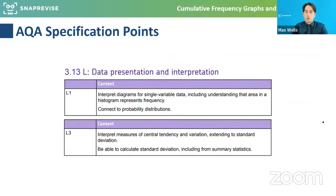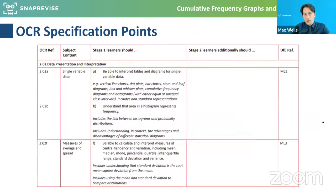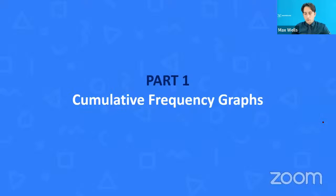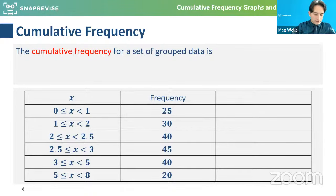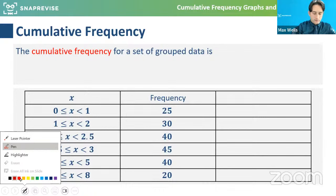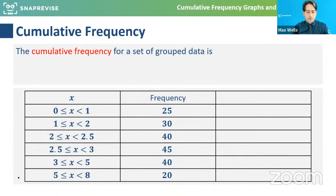This is something that's examinable on all the different exam boards, so it's very much a part of the A-level whether you're doing it with AQA, OCR, or Edexcel. This topic will appear. So to start with, we're going to look at cumulative frequency graphs and define what's going on — what they're all about. This is something you would have seen at GCSE, but it's really important that we're absolutely solid with how they work.